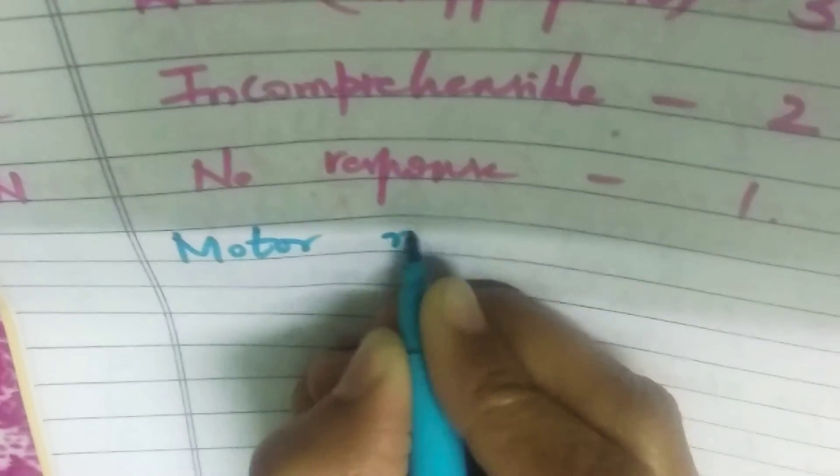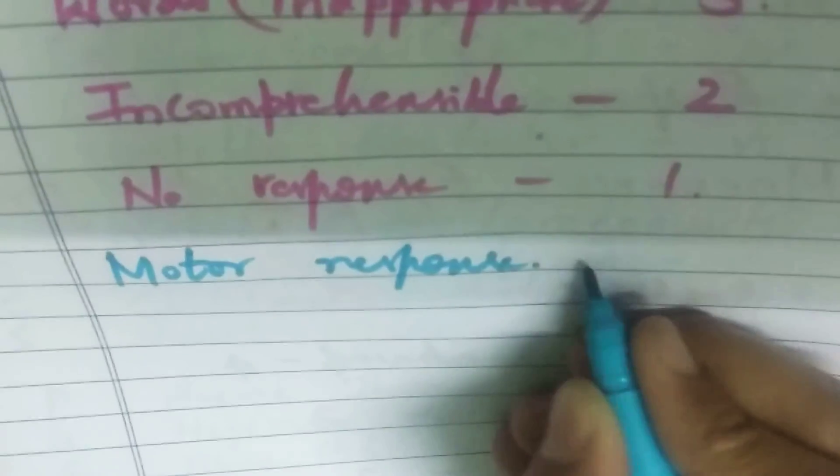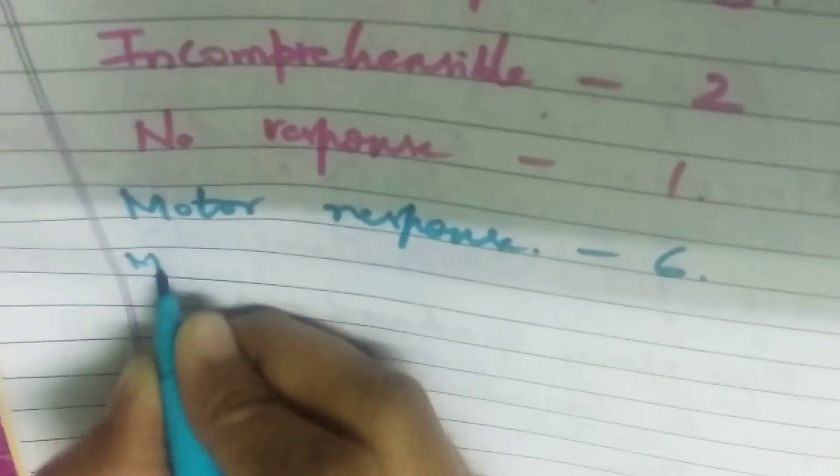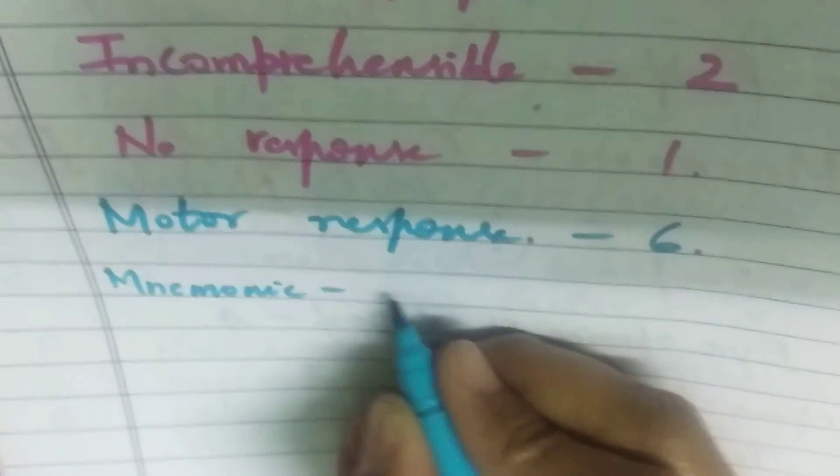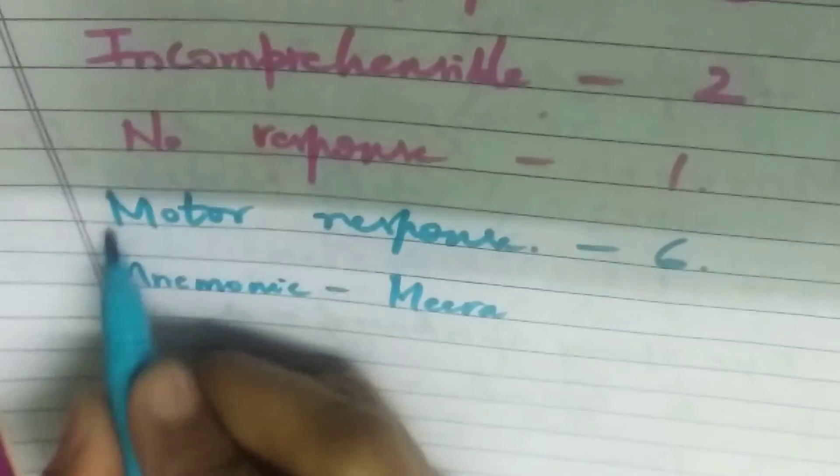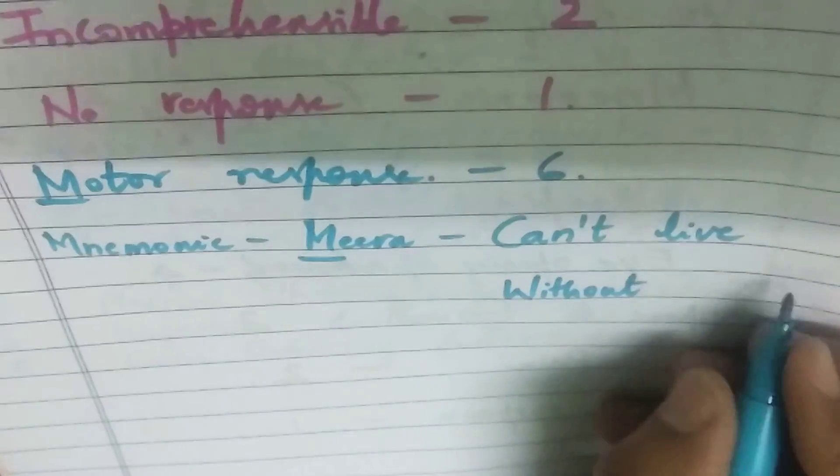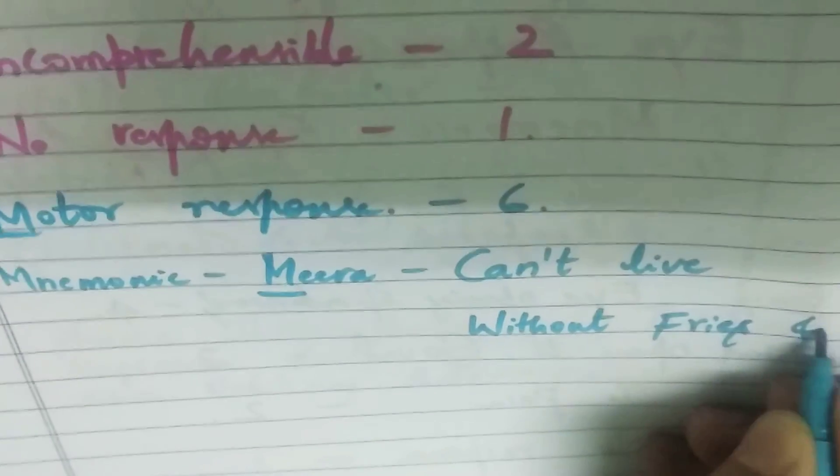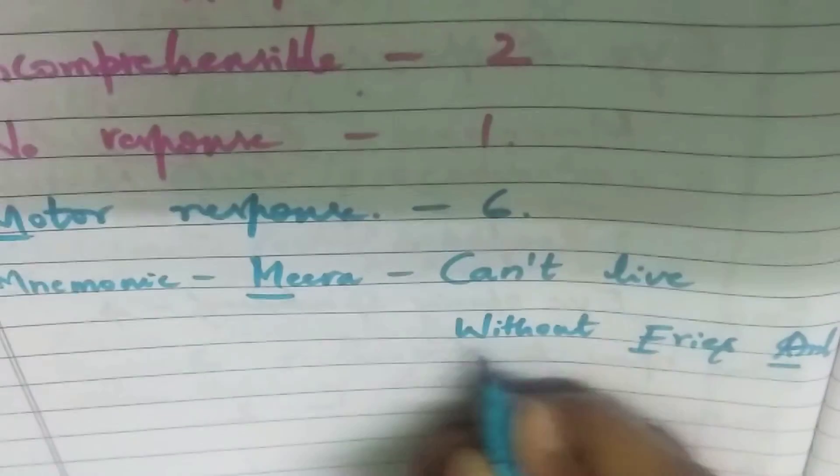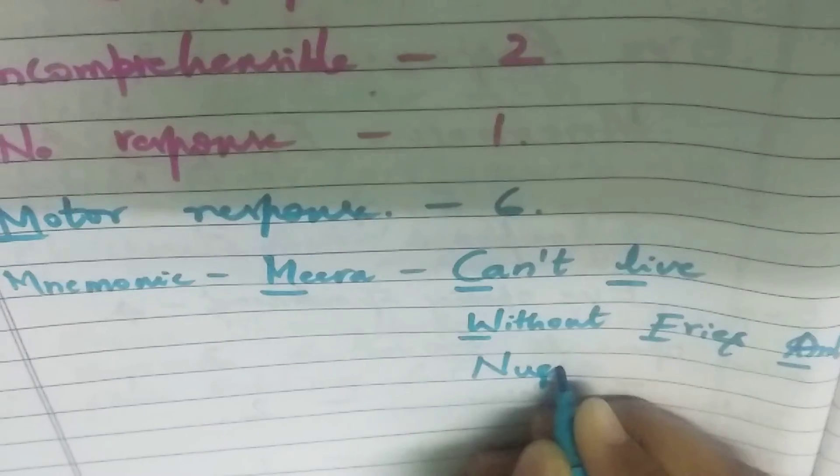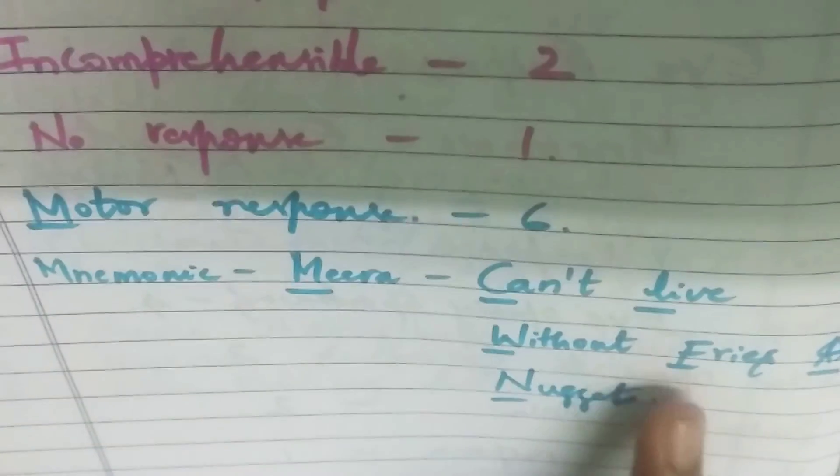So all together, the minimum score is three. Then comes the motor response. In the motor response, obviously it is six to make it as a 15. And mnemonic here is, so let's take mirror for motors. We have mirror, what she says, can't live without fries and nuggets. So C W, C L W F A N.